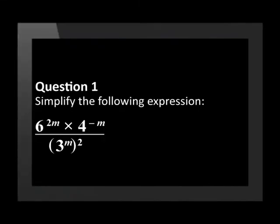Question 1. Simplify the following expression: 6 to the power of 2m, times 4 to the power of negative m, over 3 to the power of m, in brackets, squared.